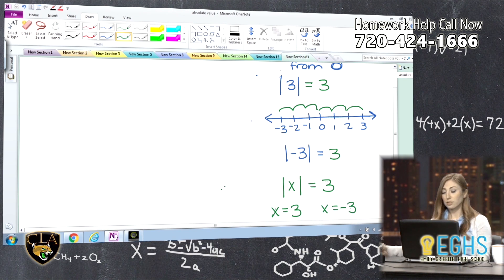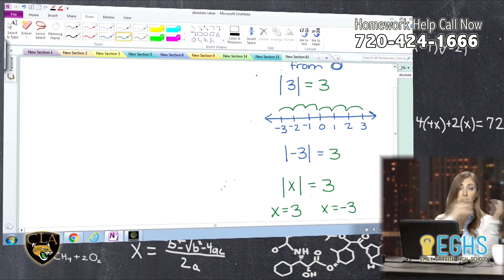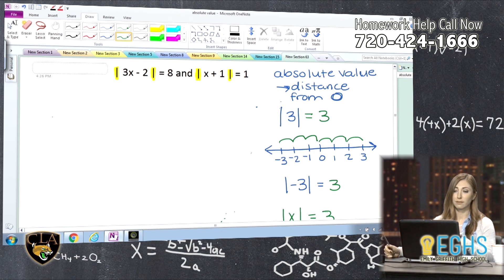We saw that it could be positive three, because that has a distance of three. It could also be negative three, because that also has a distance of three. So these absolute value equations actually have two solutions. One on the positive end of the scale, and then one on the negative end of the scale. So when we solve these, we're going to have a positive solution and a negative solution.